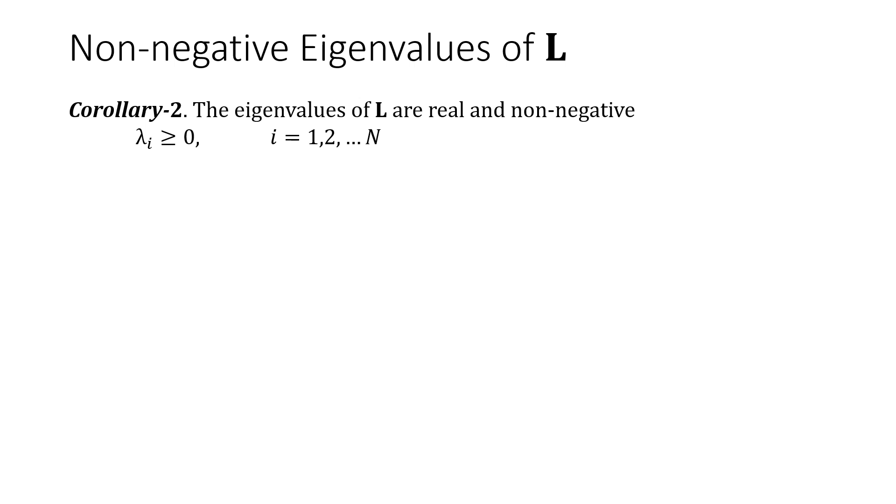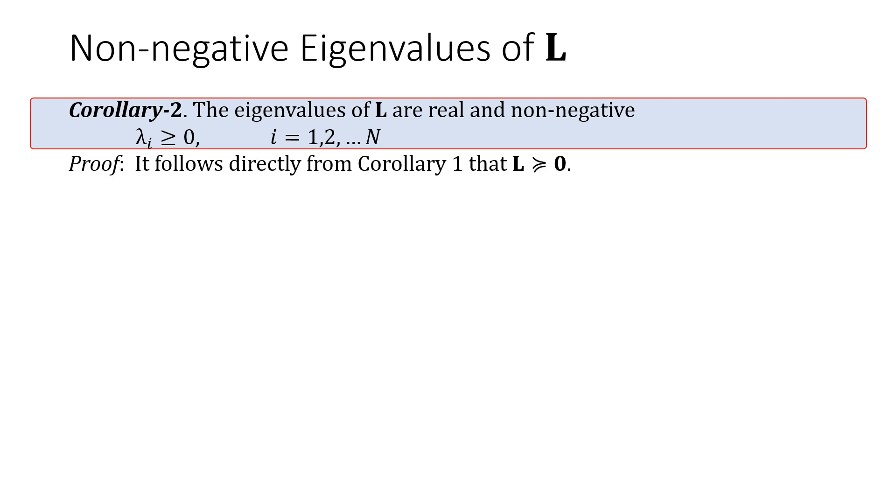So this is the corollary to the eigenvalues of L are real and non-negative. Why? Because L is positive semi-definite. So it directly follows from the previous corollary that corollary 2 holds. Lambda i will always be greater than or equal to zero.